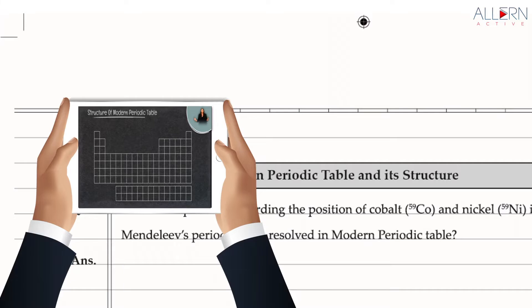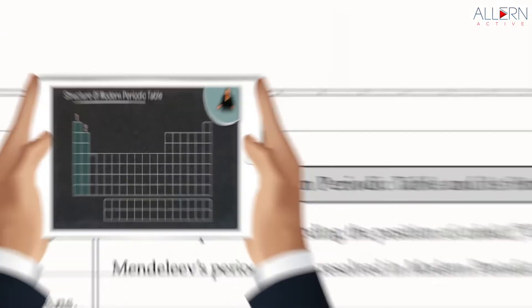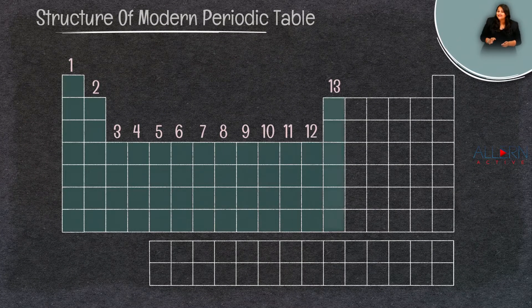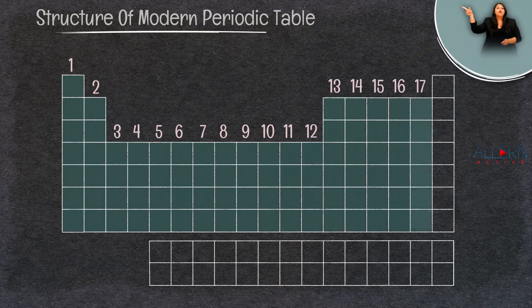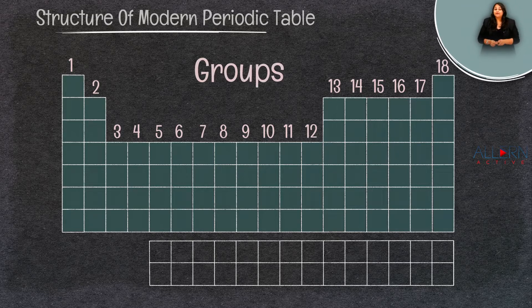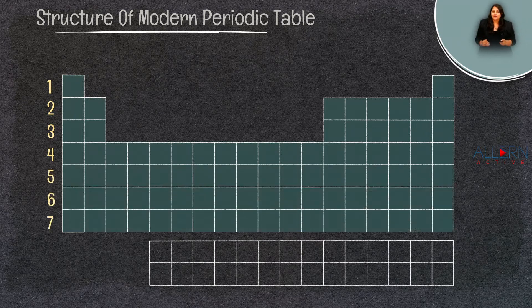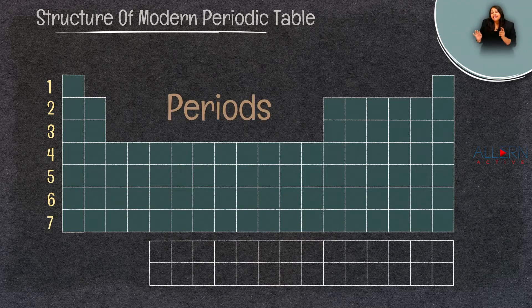He created another structure of the periodic table which consisted of groups one to 18. Other than groups, it also had horizontal rows which numbered from one to seven. These horizontal rows were called the periods.